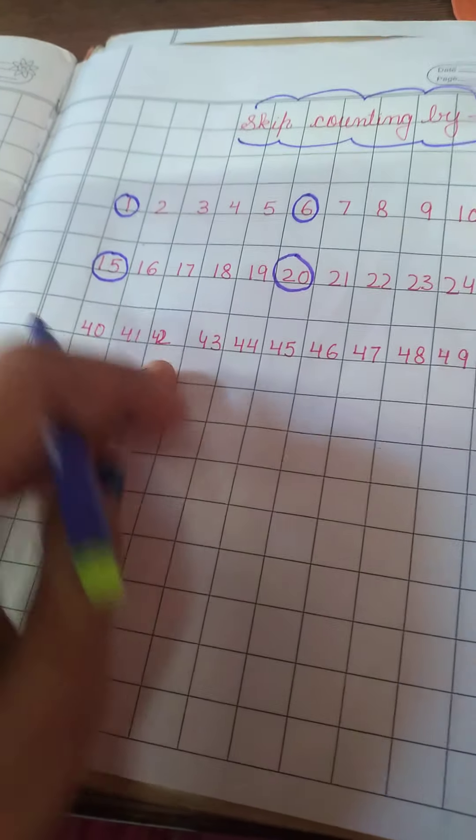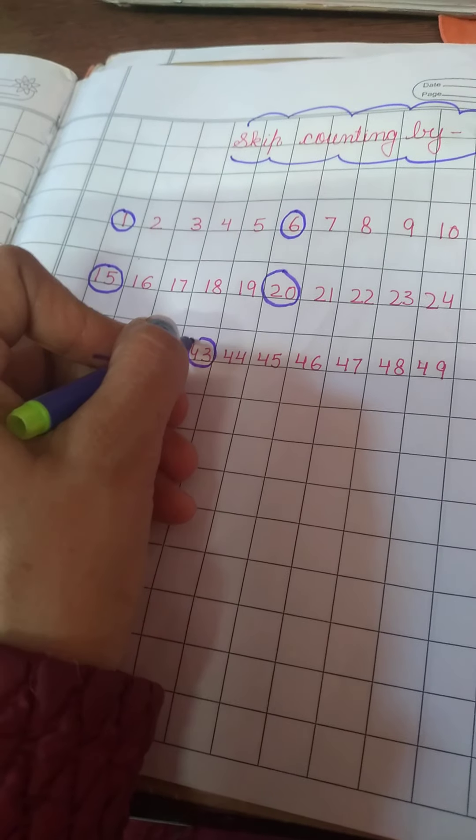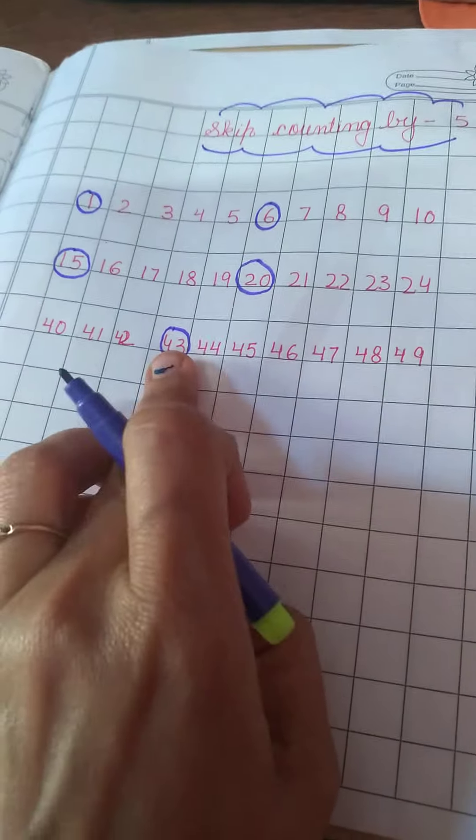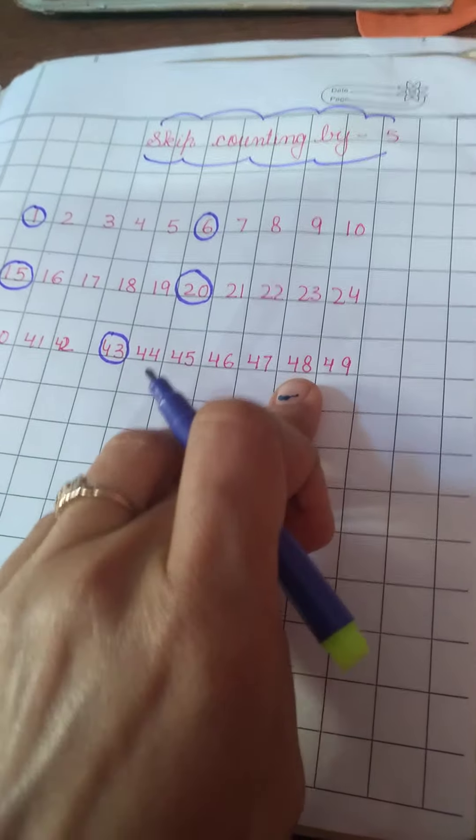Same way if I am giving you 43. 43 number. And now you have to jump on fifth number. After 43: 1, 2, 3, 4, 5. Next number will be 48.